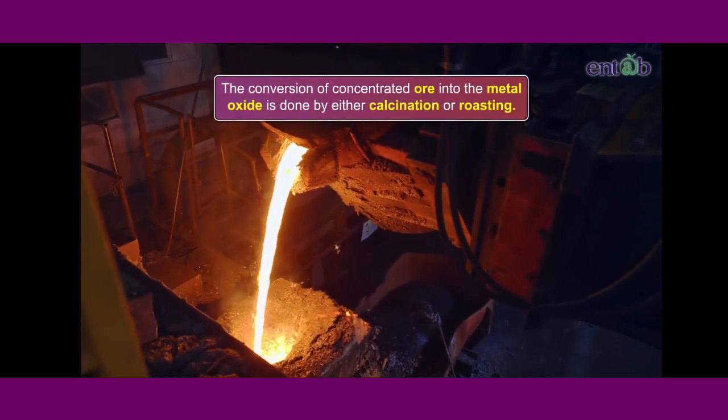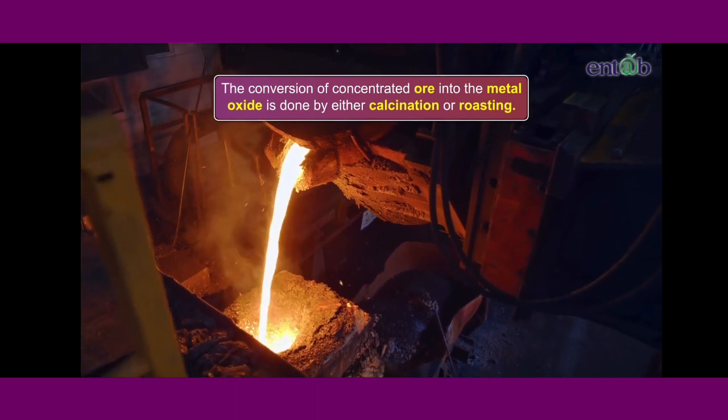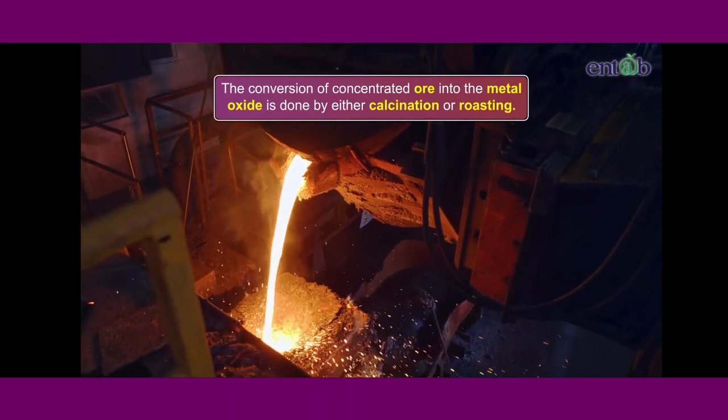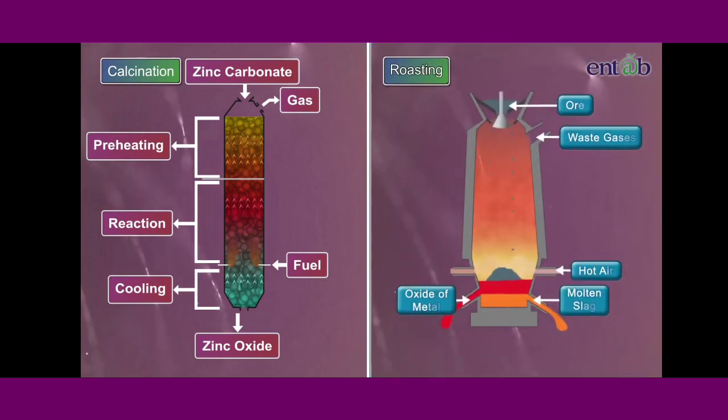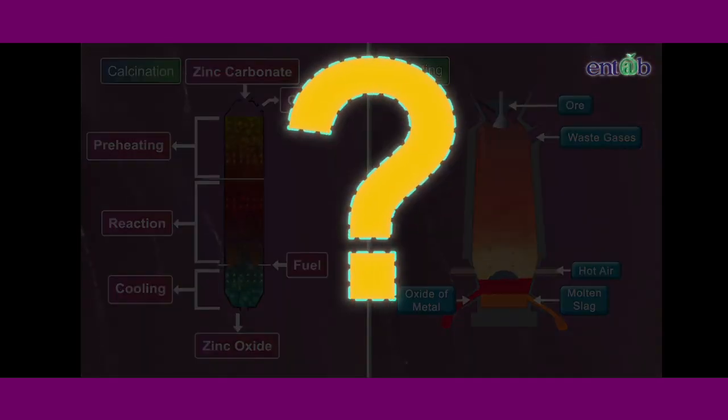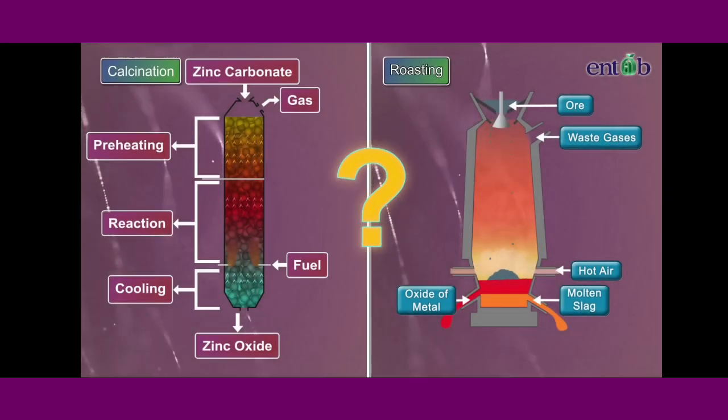The conversion of concentrated ore into the metal oxide is done by either calcination or roasting. What are these processes and how different are they from one another? Let us explore the process one by one.